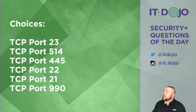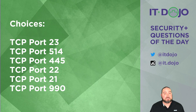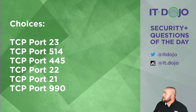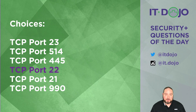First one on the list is port 23 using TCP — no, that's Telnet. Next is TCP port 514 — no, that is RCP and RSH. Next is port 445 — no, that is Microsoft file sharing using SMB. Next on the list is port 22 — yes. SCP actually uses SSH to establish the connection and then do file copies between systems. So that's absolutely the answer you're looking for.